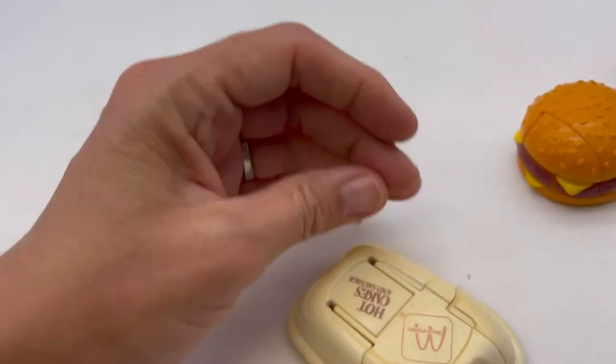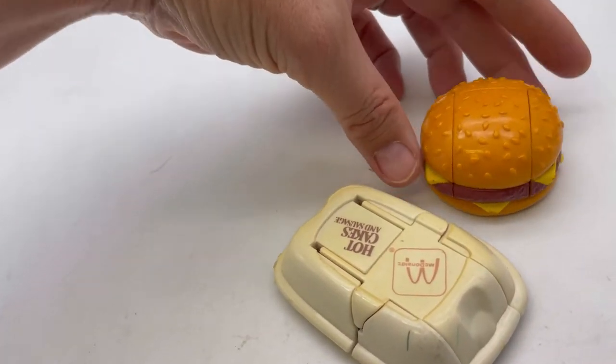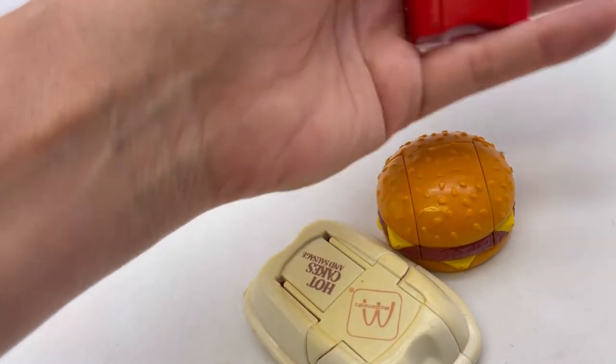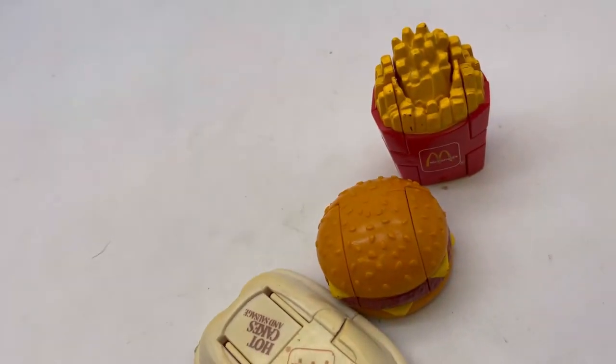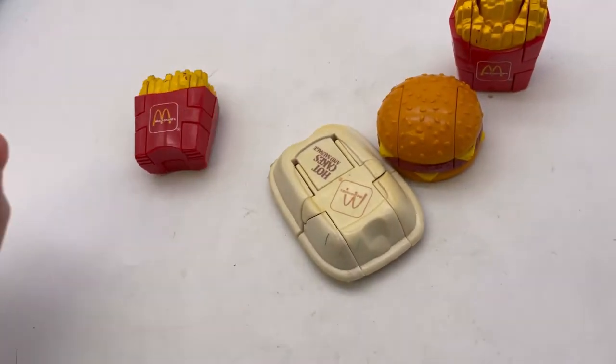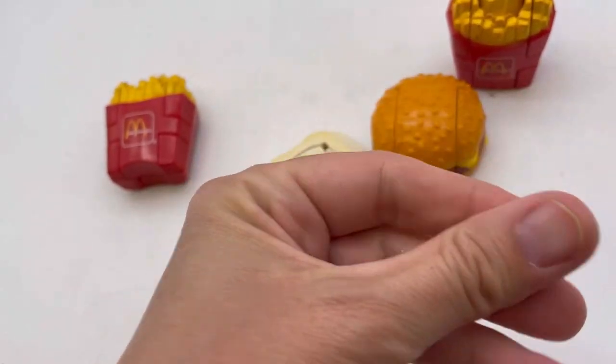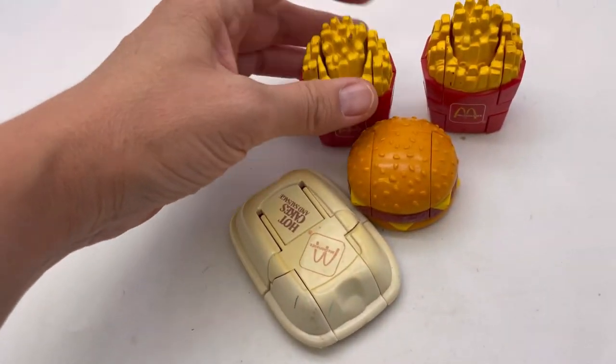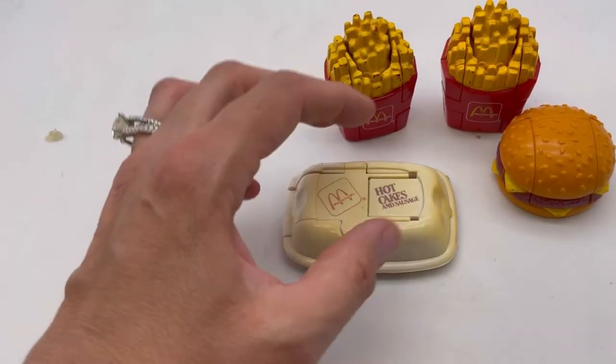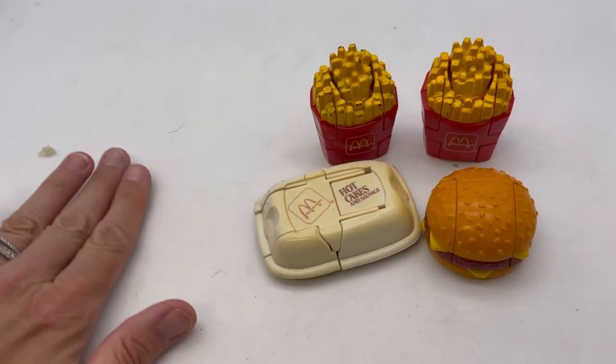Yeah, so this lot includes the hot cake, the cheeseburger, the french fries, and there's a piece of glue that came off the bottom of the cheeseburger. I did pick that off and the other french fry. So you got four pieces in this lot. That is how they work.